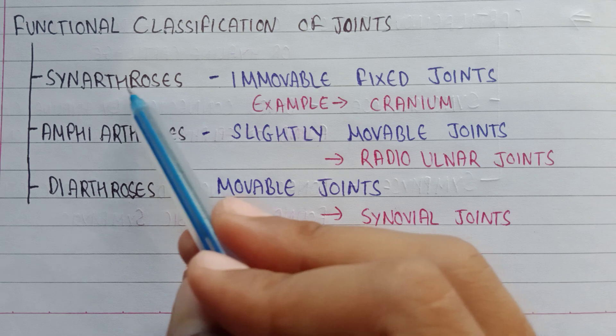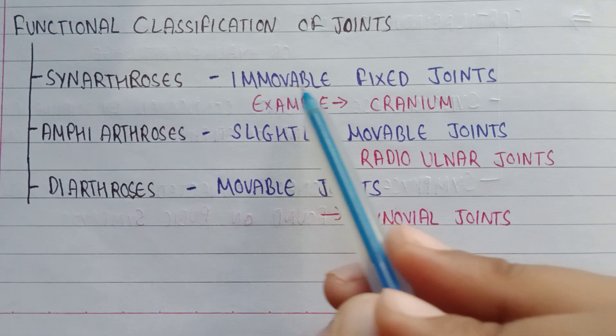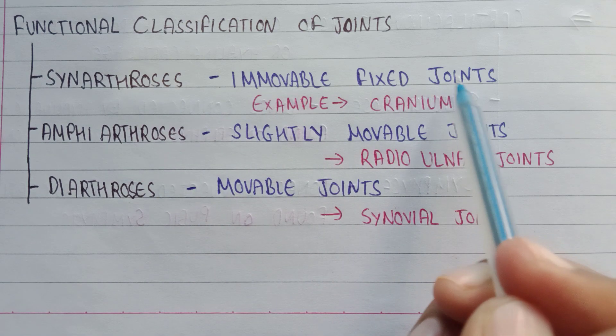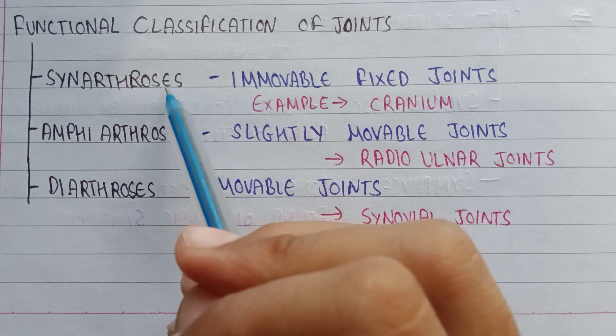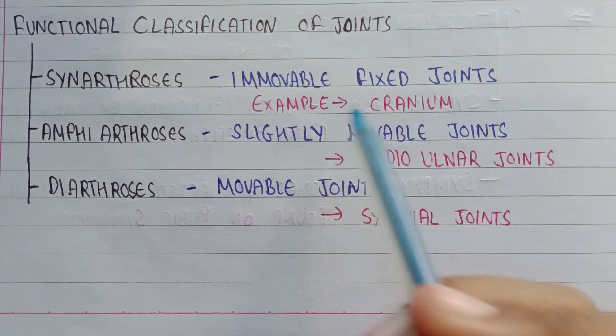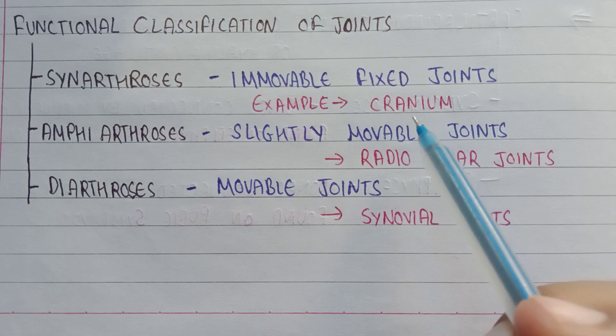Synarthrosis are immovable fixed joints, meaning they do not show any type of movement. For example, the cranium does not show any type of movement, so it is an example of a synarthrosis joint.